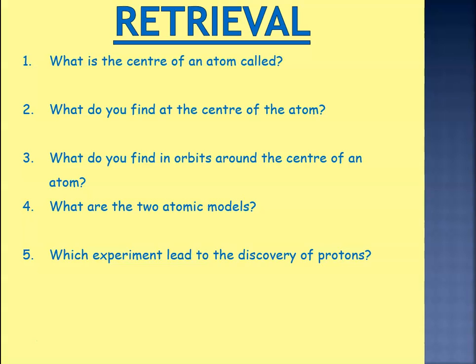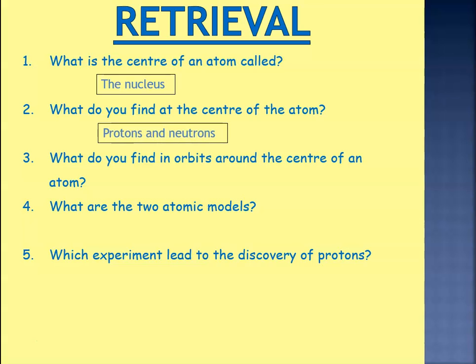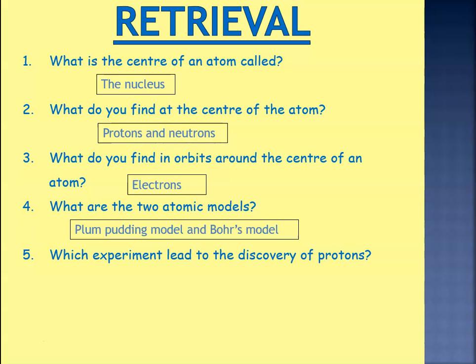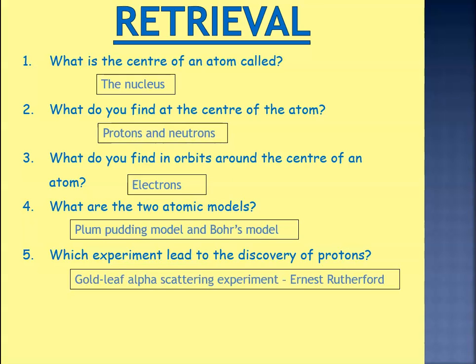Question one: what's the centre of an atom called? It's referred to as the nucleus. Question two: what do we find at the centre of an atom? We find protons and neutrons — they're present within the nucleus. What do we find in orbits around the centre? That'd be the electrons. What are the two atomic models? We have the plum pudding model and Bohr's model, or the nuclear model. Which experiment led to the discovery of protons? That's the Gold Leaf Alpha Scattering Experiment by Ernest Rutherford — he ensured that we knew there were protons present in the centre.